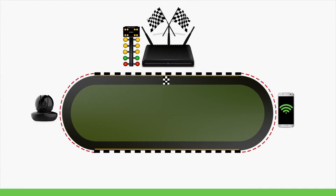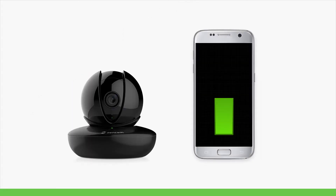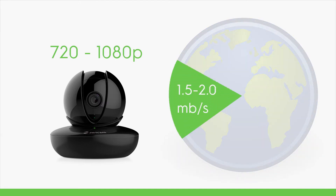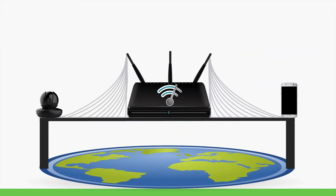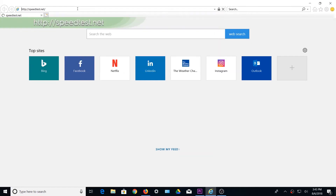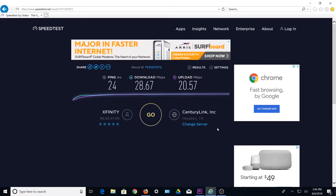Network speed is the most common factor when determining connection issues. If the speeds on your network are insufficient, you will not be able to connect to your devices properly. IP cameras are heavily impacted by upload speeds. A typical IP camera with a resolution of 720 to 1080p requires a minimum of 1.5 to 2 megabits per second of upload speed per camera to function properly. Higher resolutions will take up more bandwidth beyond 2 megabits per second. To diagnose your network, run a speed test at speedtest.net and verify that your upload and download speeds are sufficient.